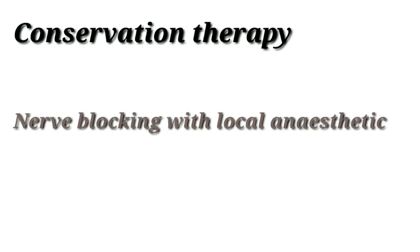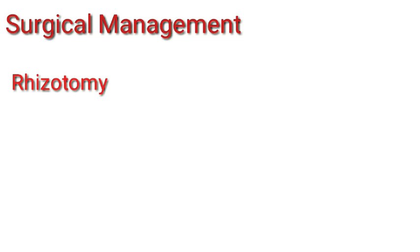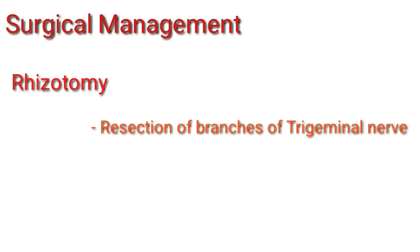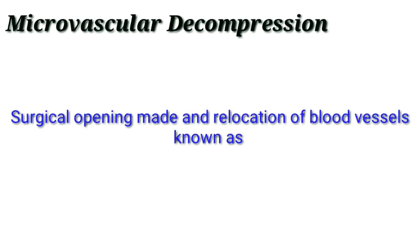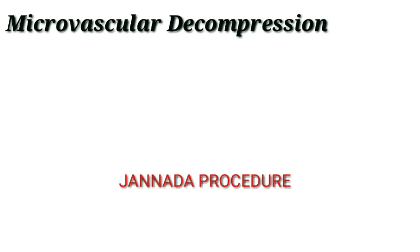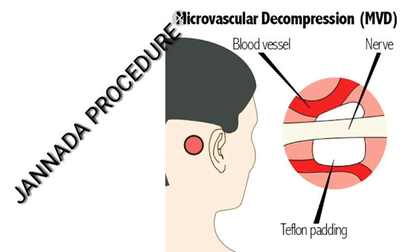For surgical management: first is rhizotomy, which is resection of the branches of the trigeminal nerve — the affected branches are cut. Second is microvascular decompression, a surgical procedure in which an opening is made and blood vessels are relocated. This is known as the Jannetta procedure, in which blood vessels are repositioned to address the underlying cause.